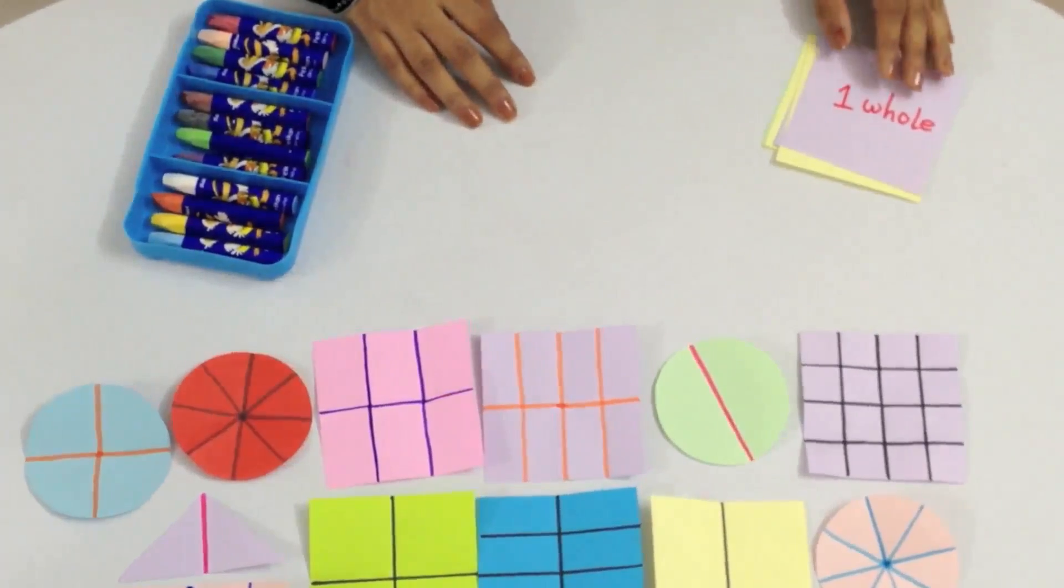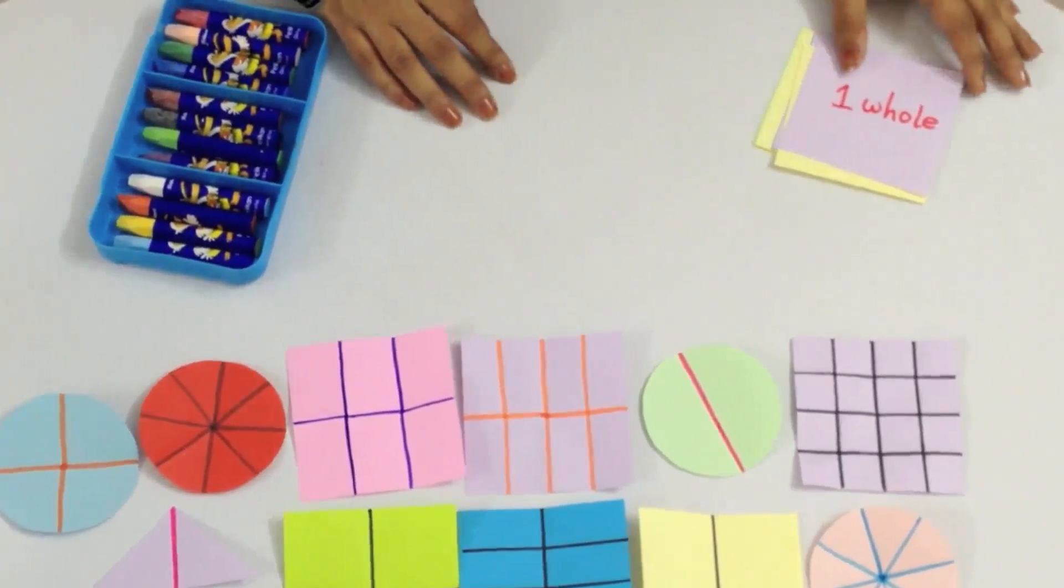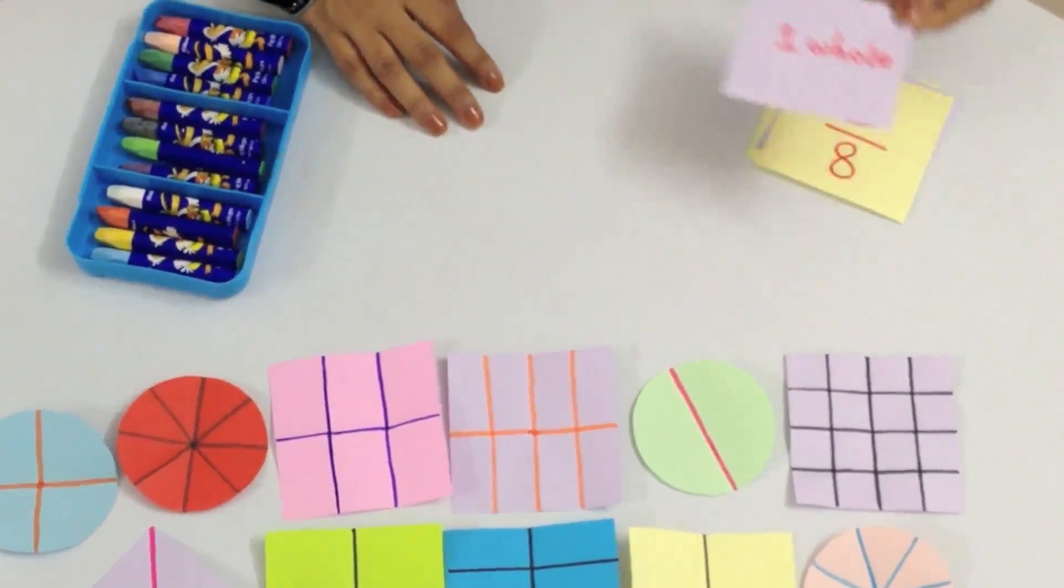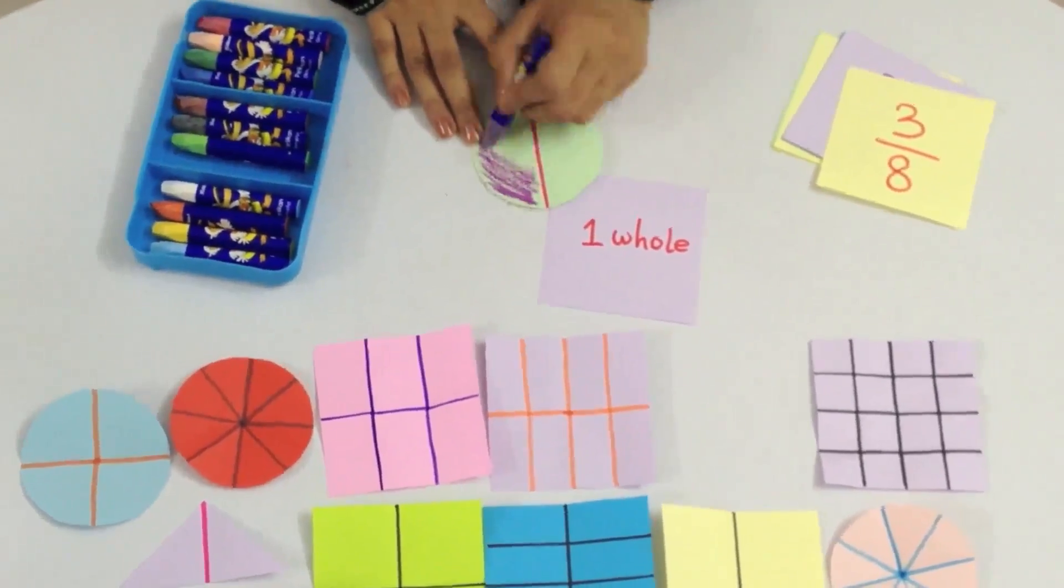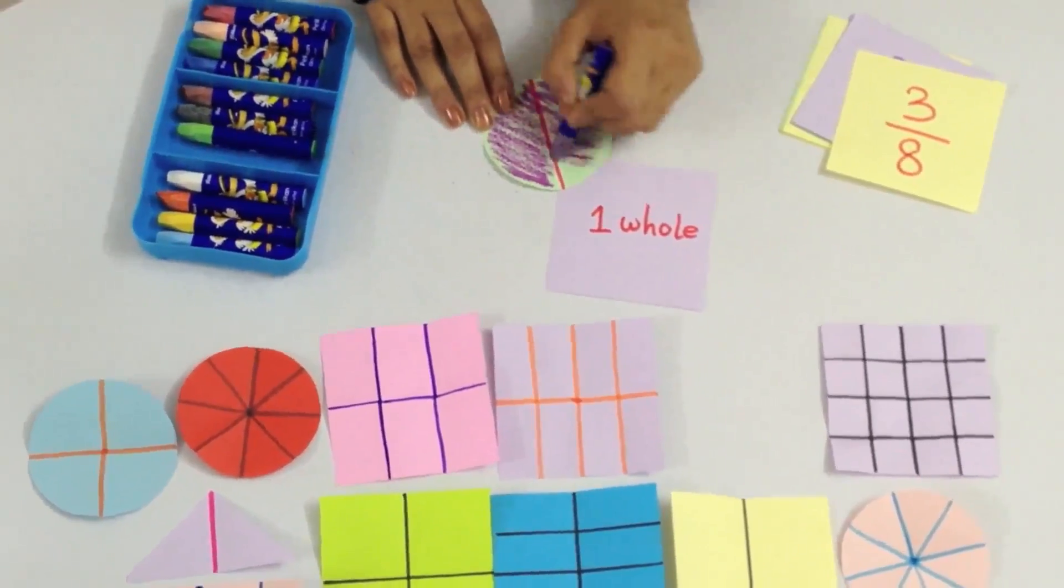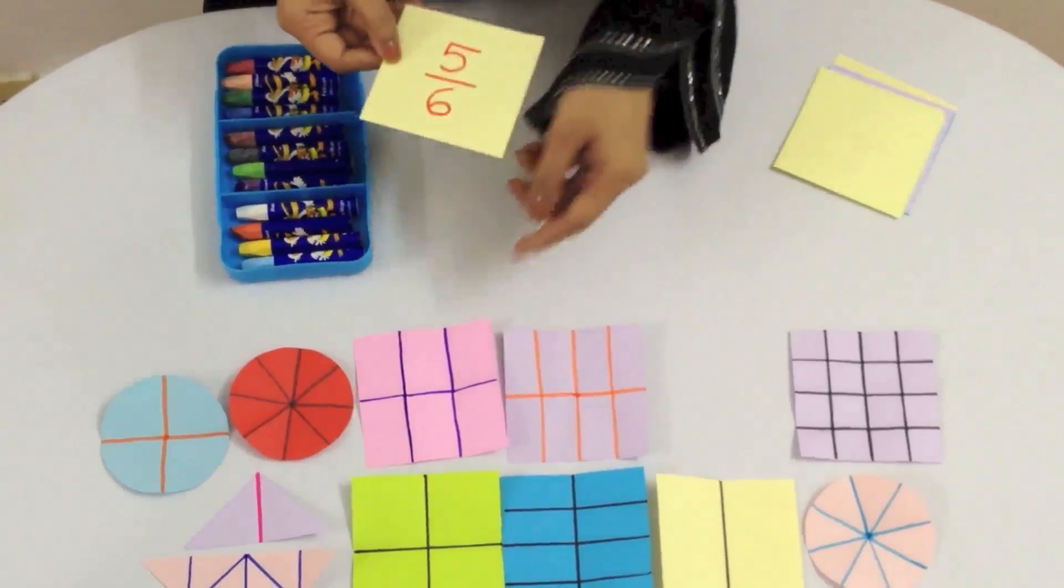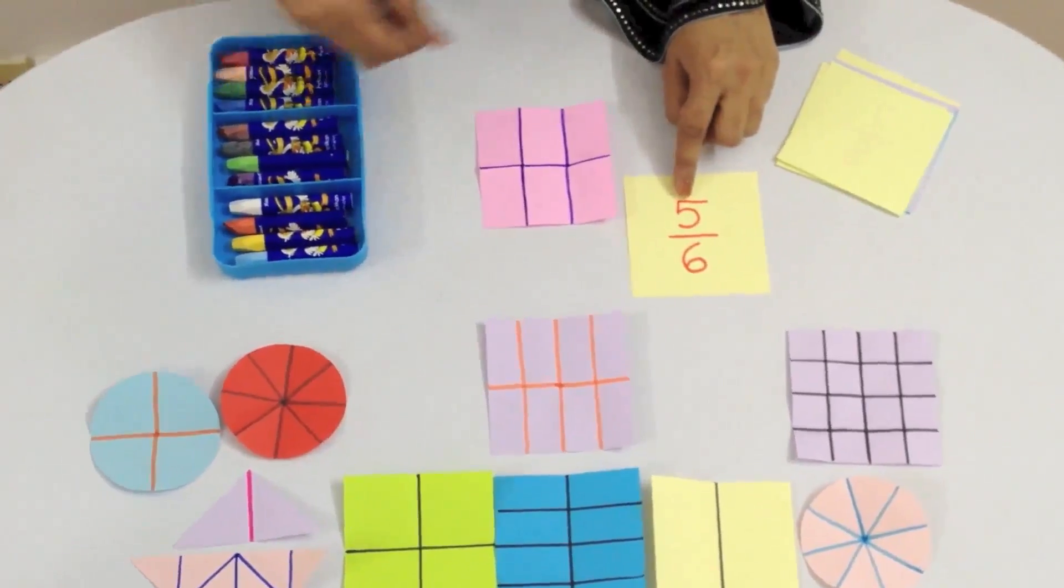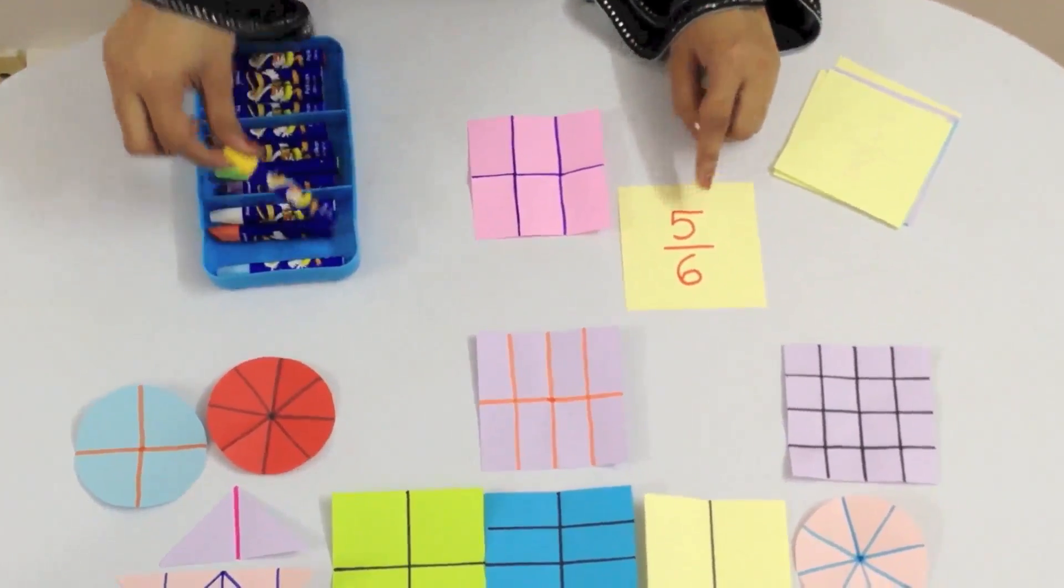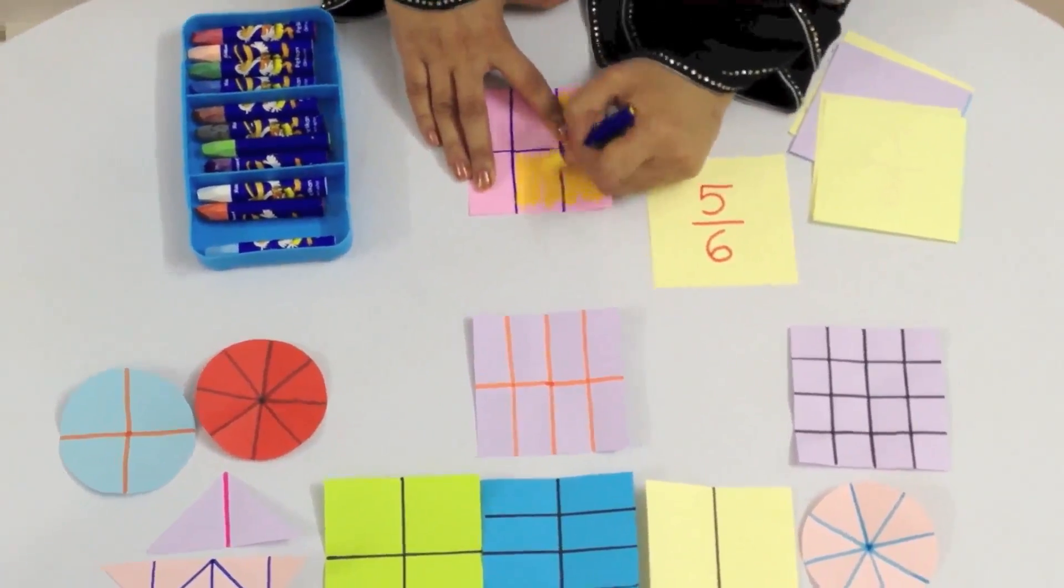In this activity, we have fractions and we have shapes which are divided in different parts. We are going to pick a fraction and then we are going to color it accordingly. To color this fraction, we have to pick a shape from here which has six equal parts, and then we color five out of the six parts.